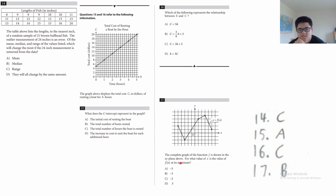Question 17: the complete graph of function f is shown in the xy-plane. For what value of x is f(x) at its minimum? Find the point where y is lowest. That minimum point occurs at x = −3. Count from the origin: 0, −1, −2, −3. The answer is B.